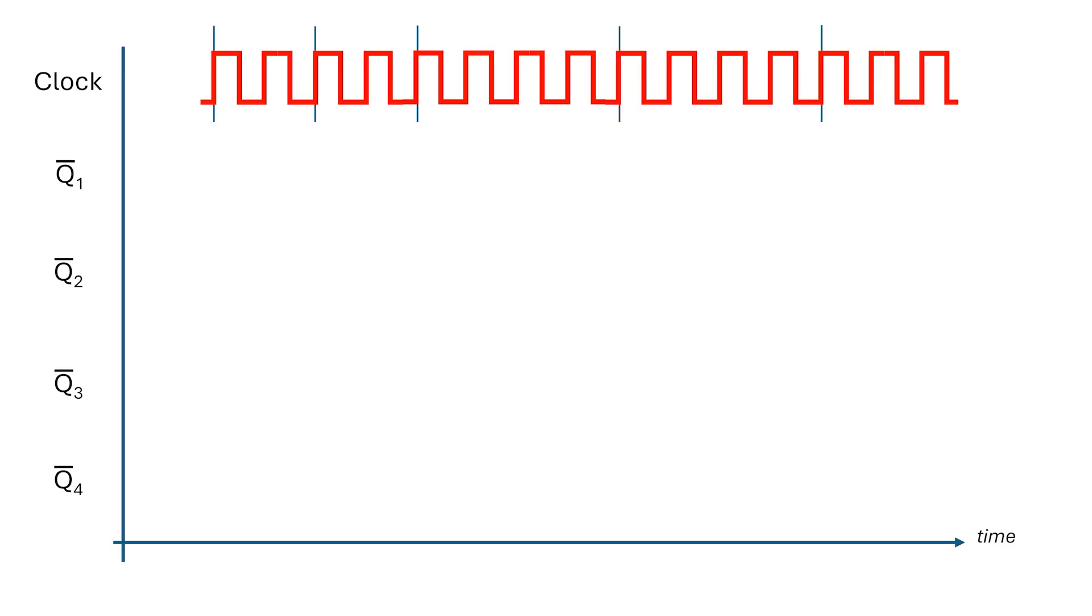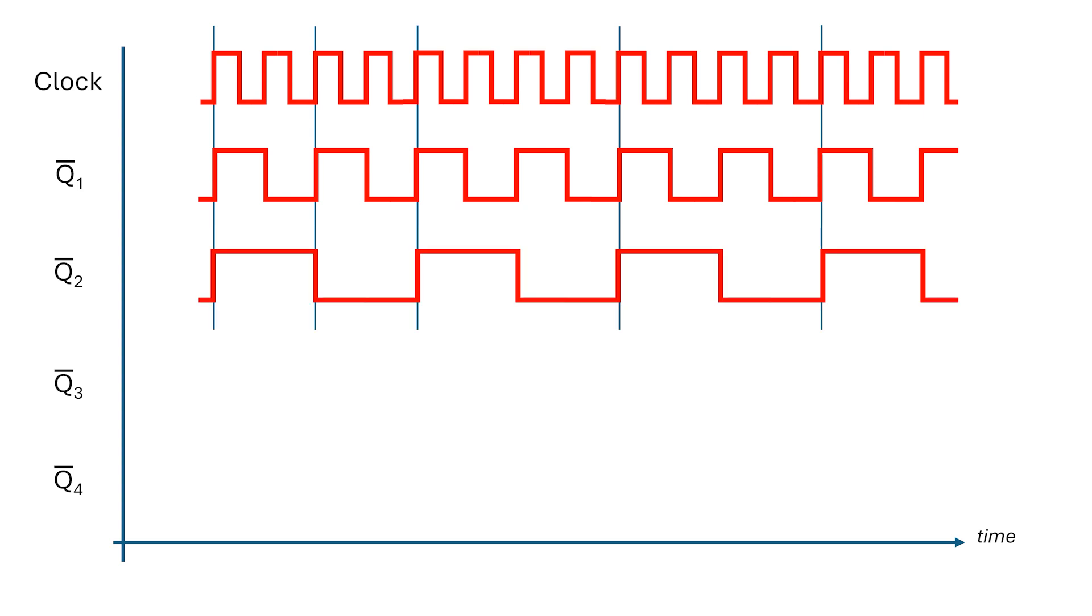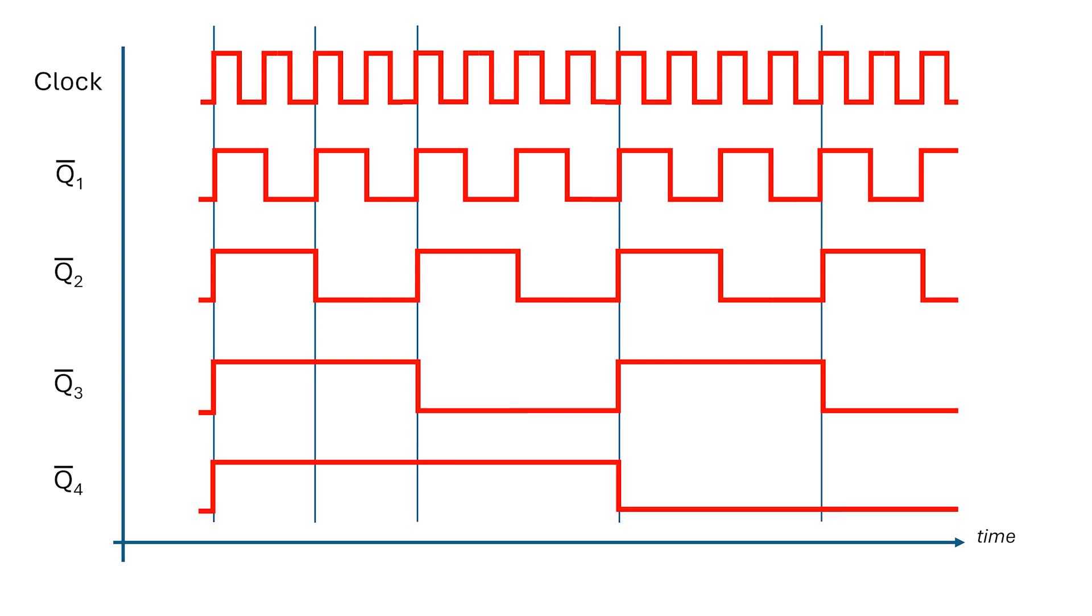If we plot this out, two clock cycles produce one Q-bar 1 cycle. Two Q-bar 1 cycles produce one Q-bar 2 cycle. Two Q-bar 2 cycles generate a single Q-bar 3 cycle. Then finally, two Q-bar 3 cycles create a Q-bar 4 cycle.